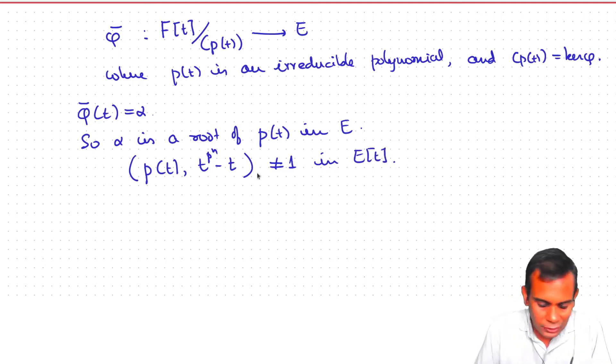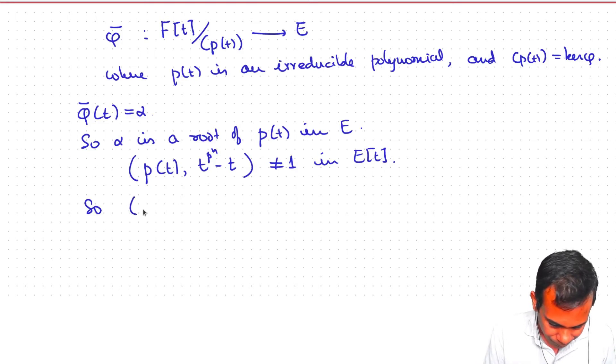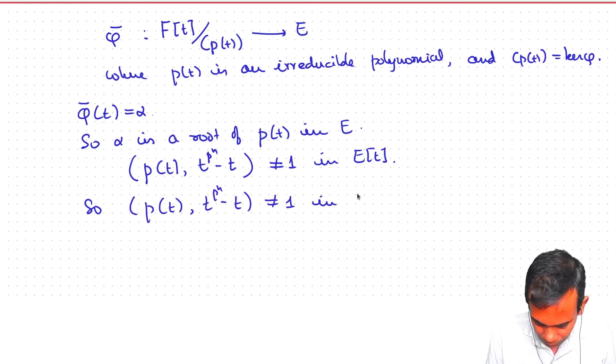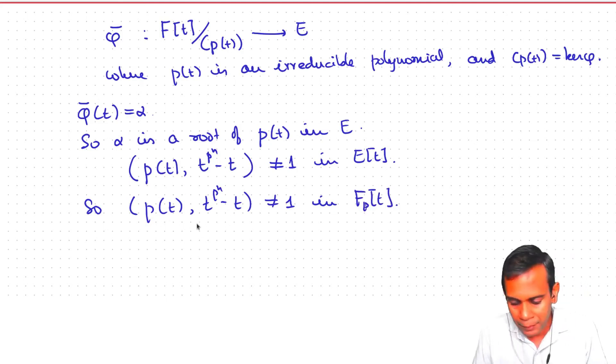But we have seen that this GCD does not actually depend on which polynomial ring we are computing it over. If the GCD is not 1 in E, it is also not 1 in Fp. So the GCD must also lie in Fp.